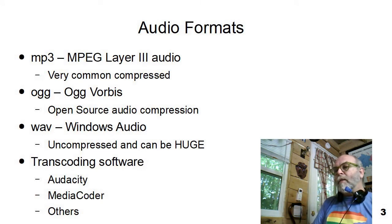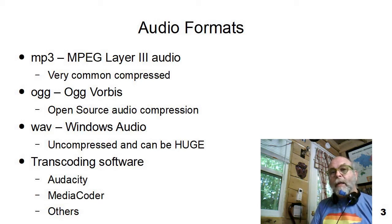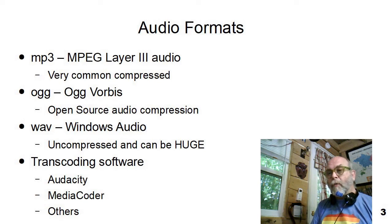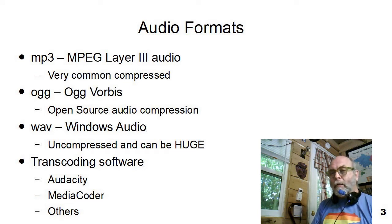Let's start by discussing a few standard audio formats. Audio can come in various formats, like images can come in various file formats. The three common file formats are: the MP3 file, which is the MPEG Layer 3 Audio standard and is a very common compressed audio file format; the OGG Vorbis format, which is an open source audio compression format used by lots of open source operating systems; and the WAV file, which is a Windows audio file and is an uncompressed audio file, meaning a WAV file can end up getting huge.